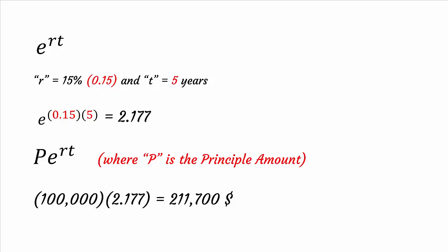Let us solve a practical problem. If you invest $100,000 in some financial company for 5 years with 15% interest per year, you should get $211,700 at the end of 5 years.